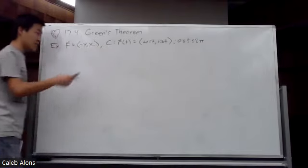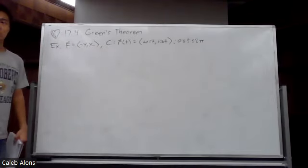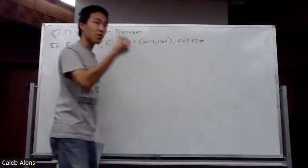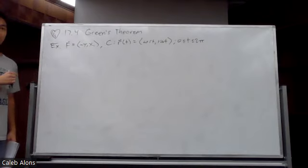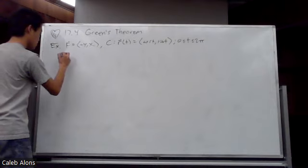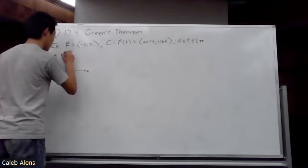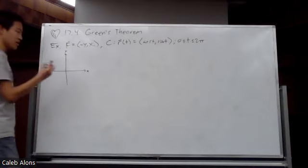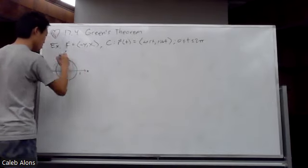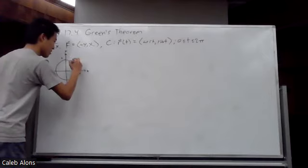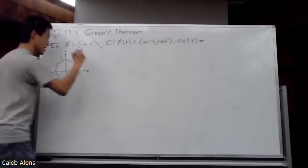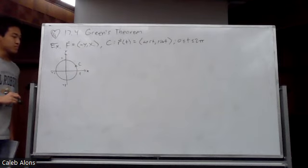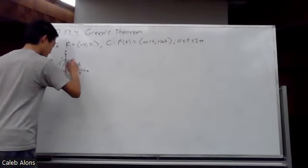Is C closed? Yes — cos(0) = cos(2π) and sin(0) = sin(2π), so you start and end in the same spot. Does it intersect itself? No. So we can apply Green's Theorem. This parameterization traces the unit circle with radius one — here's our unit circle going counterclockwise. This is our C. So what is R? The region inside C.